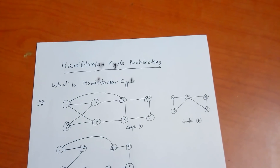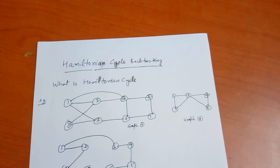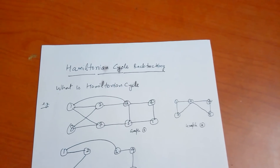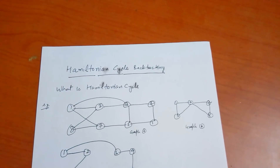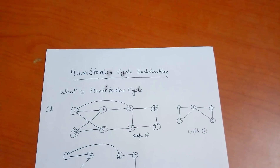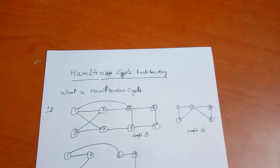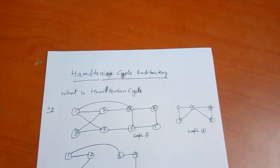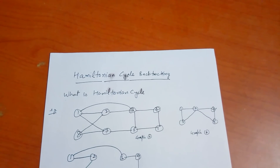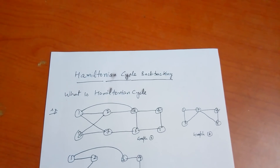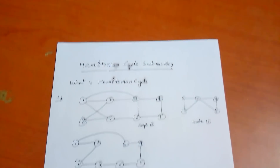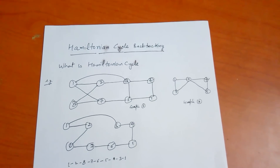Today's topic is Hamiltonian cycle with backtracking. We have two graphs: Graph A with eight nodes and Graph B with five nodes. A Hamiltonian cycle is a traversal of a graph where you start from a given node, visit all nodes exactly once, and return to the starting node. If you can do this, it is a Hamiltonian cycle. Graph A has a Hamiltonian cycle, and Graph B does not.